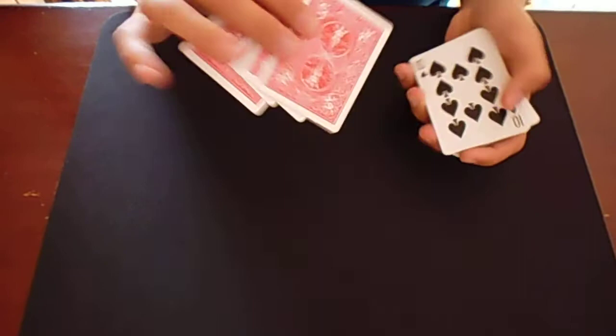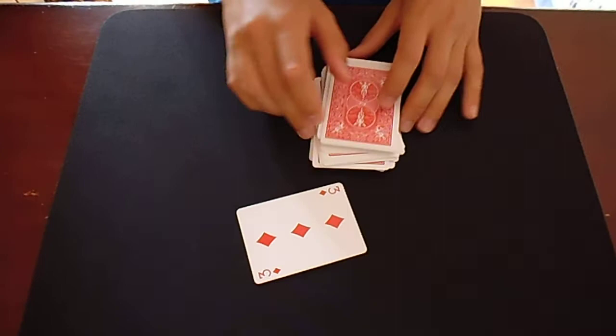We're going to be using a deck of playing cards. As you know, every single card is different. We've got clubs, hearts, diamonds, and spades. A card is going to be freely selected. In this case, it is the three of diamonds.